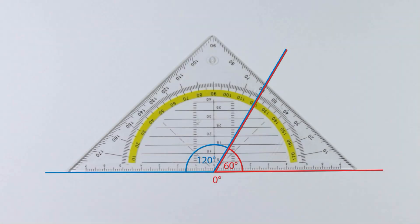On the yellow scale, 120. 120 plus 60 equals 180.